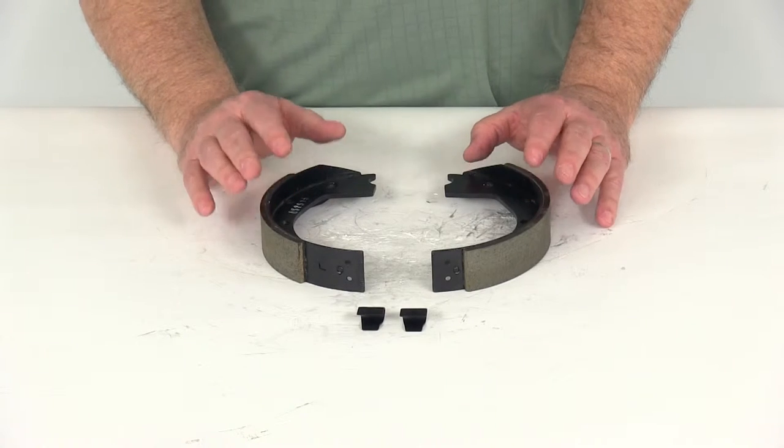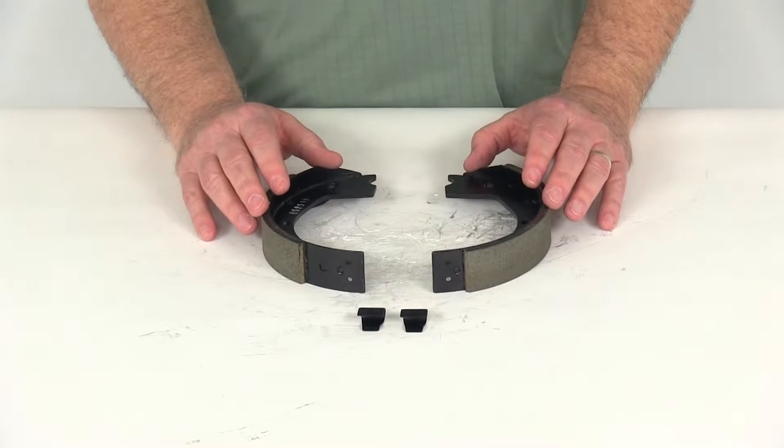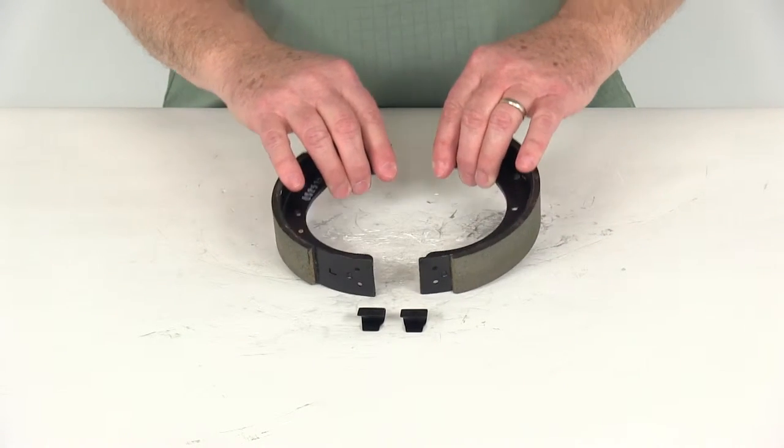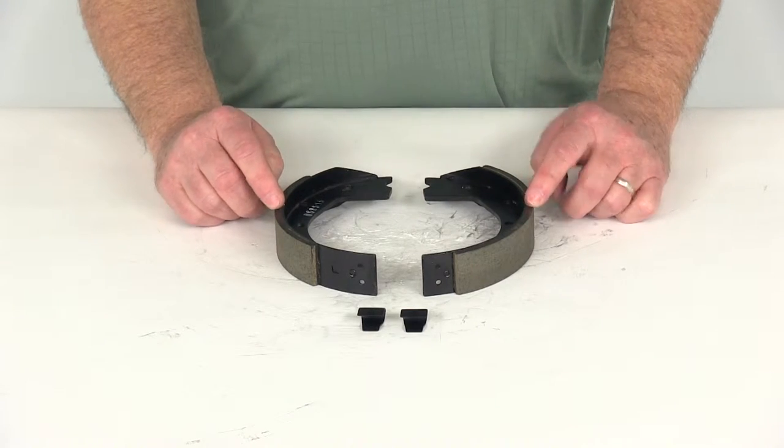These brake shoes and linings are for electric trailer brakes on 2,000-pound axles. When installed, they measure across 7 inches.